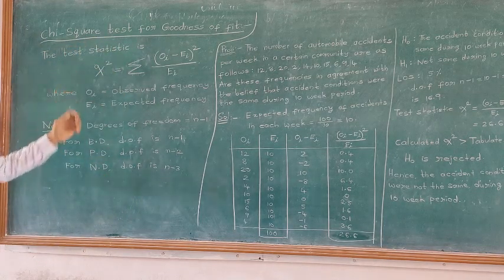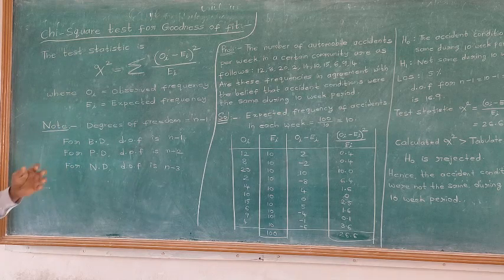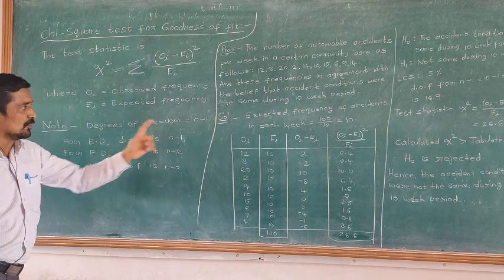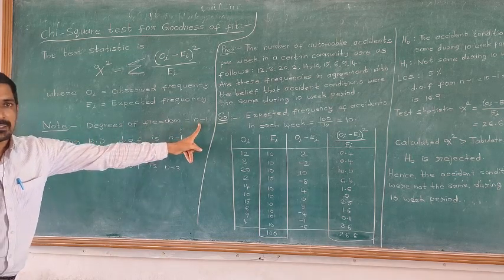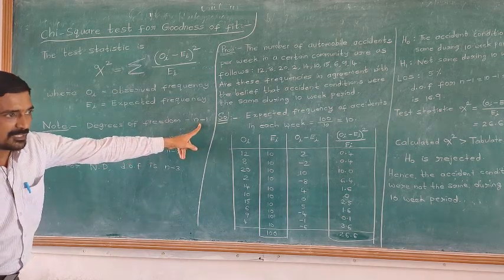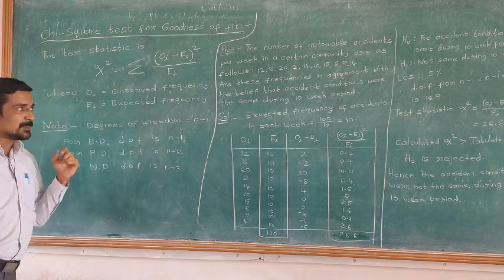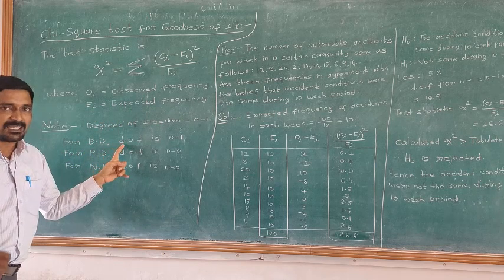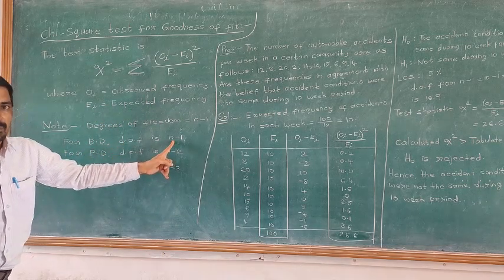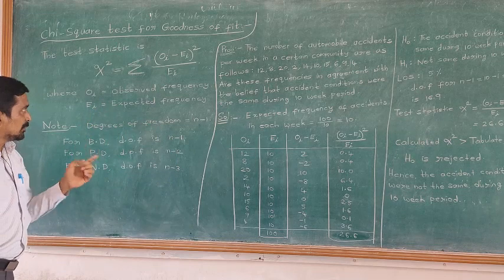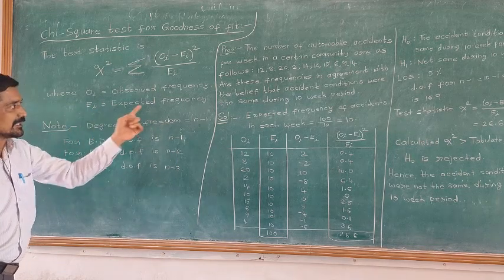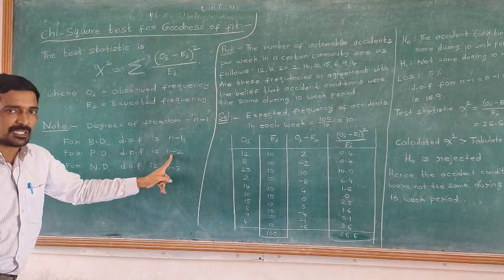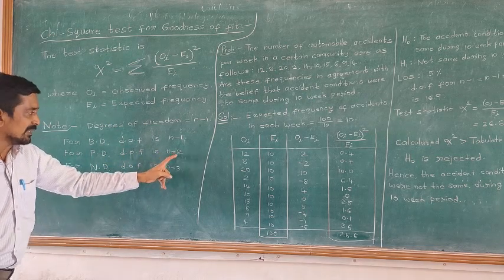Generally, we observe the table values in the following ways. In the normal case, when any number of series values are available, consider the table value under the degrees of freedom N minus 1. When you find the expected frequency using the binomial distribution, you consider the table value under degrees of freedom N minus 2.